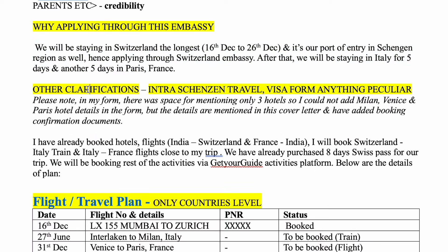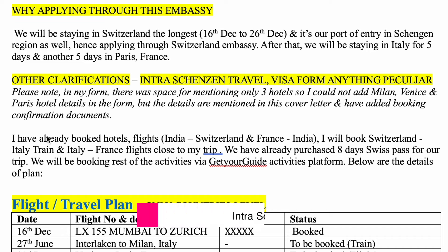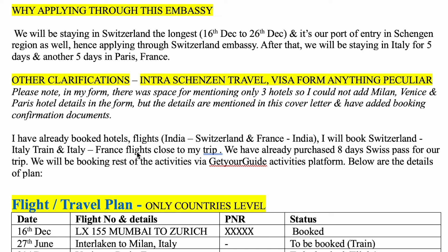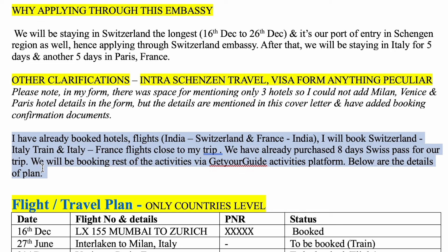The third section is clarification. For example, in the visa application form we wrote only the main country's hotels. In this cover letter, you can write the rest of the hotels, since there is no place in the form for the other hotels. The second point is about inter-country transport bookings — such as trains or buses between countries — which are not mandatory pre-bookings. You can write that your plan is to book train or bus tickets, and that the booking hasn't started yet but you will do it.